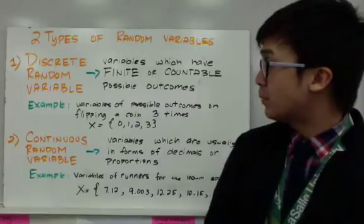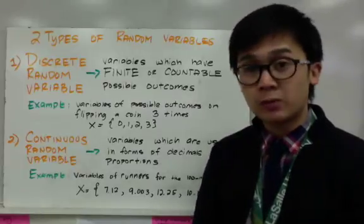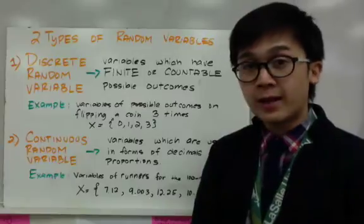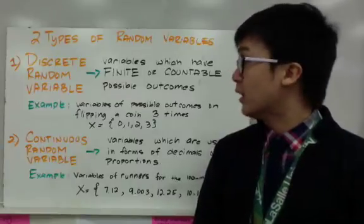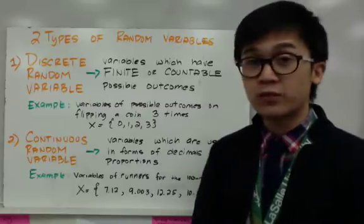Another example of discrete random variables is, let's say instead of flipping a coin three times, we flip it two times and hoping that it will land on heads. So x will be 0, 1, and 2 for your discrete random variable for that experiment.